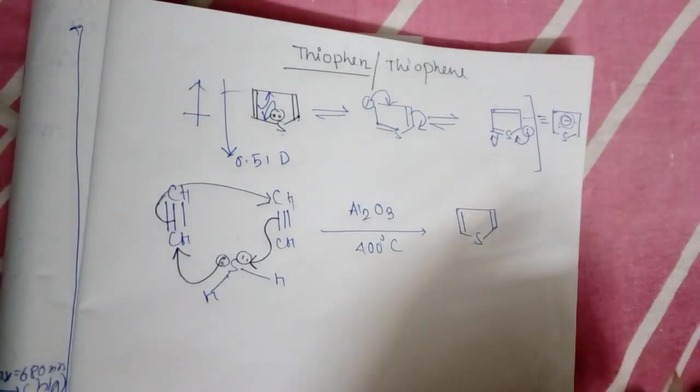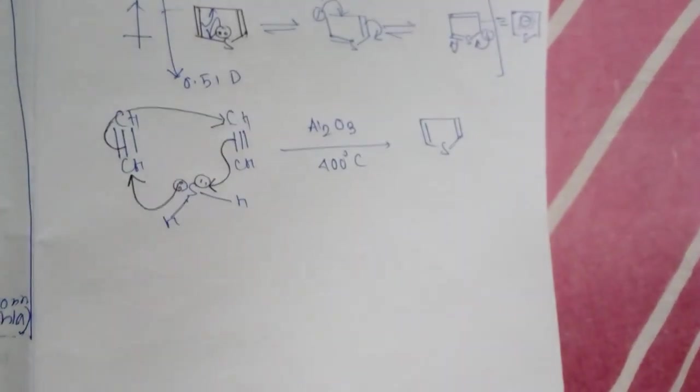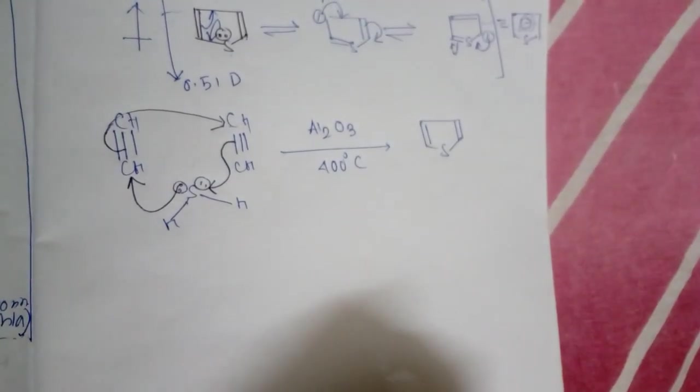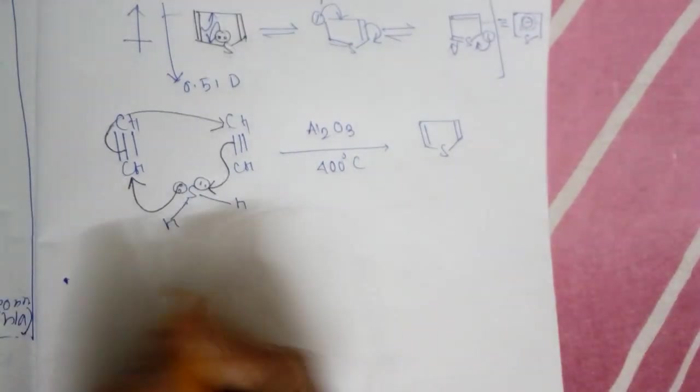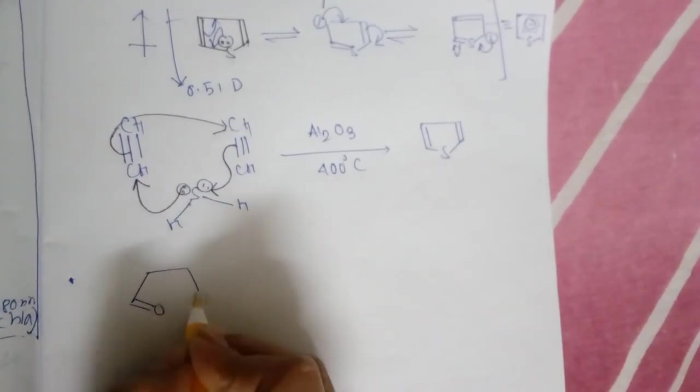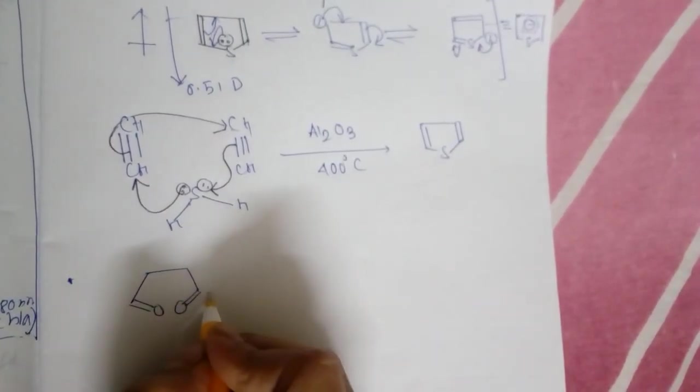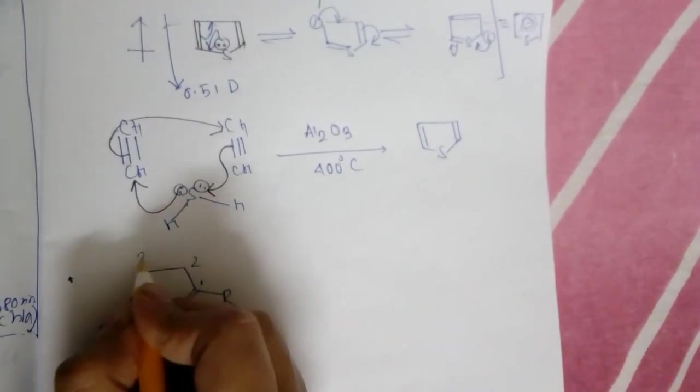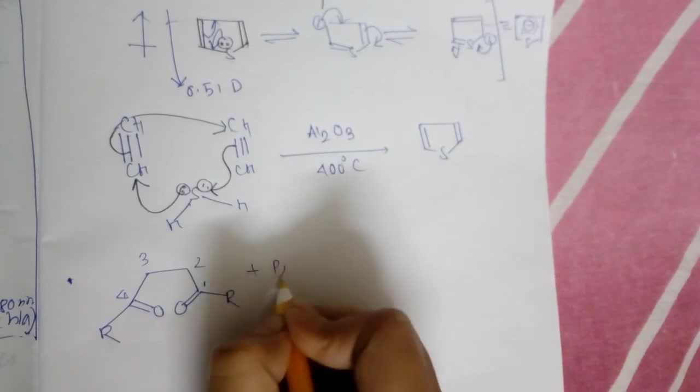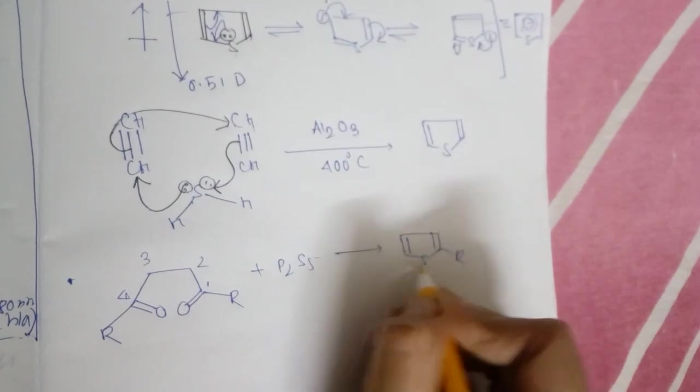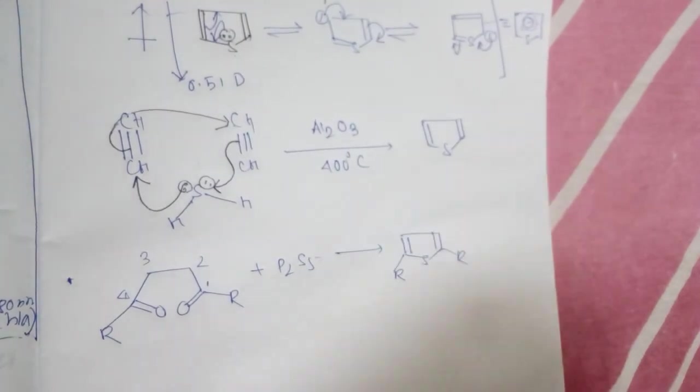This is formed in presence of Al2O3 at 400 degrees centigrade and ultimately thiophene is formed. There are many processes possible to synthesize thiophene. From diketo compound it can also be processed from 1,4-diketo compound: CH2, CH2, double bond O and double bond O, and suppose here are any alkyl groups.